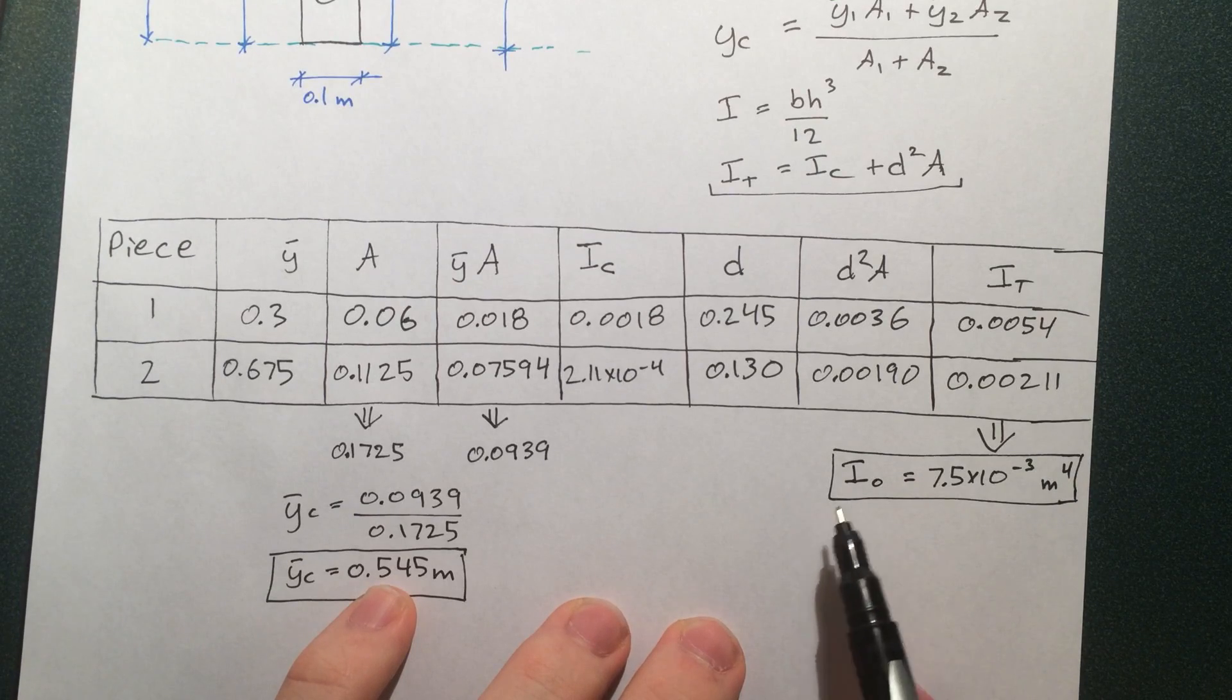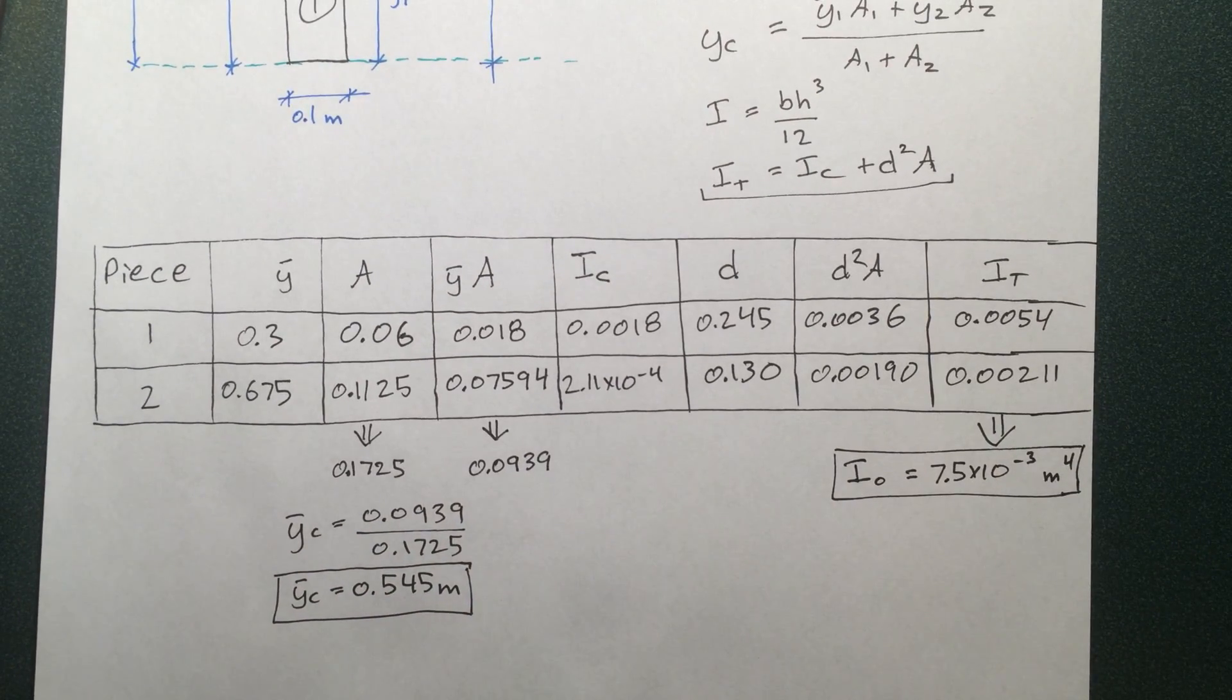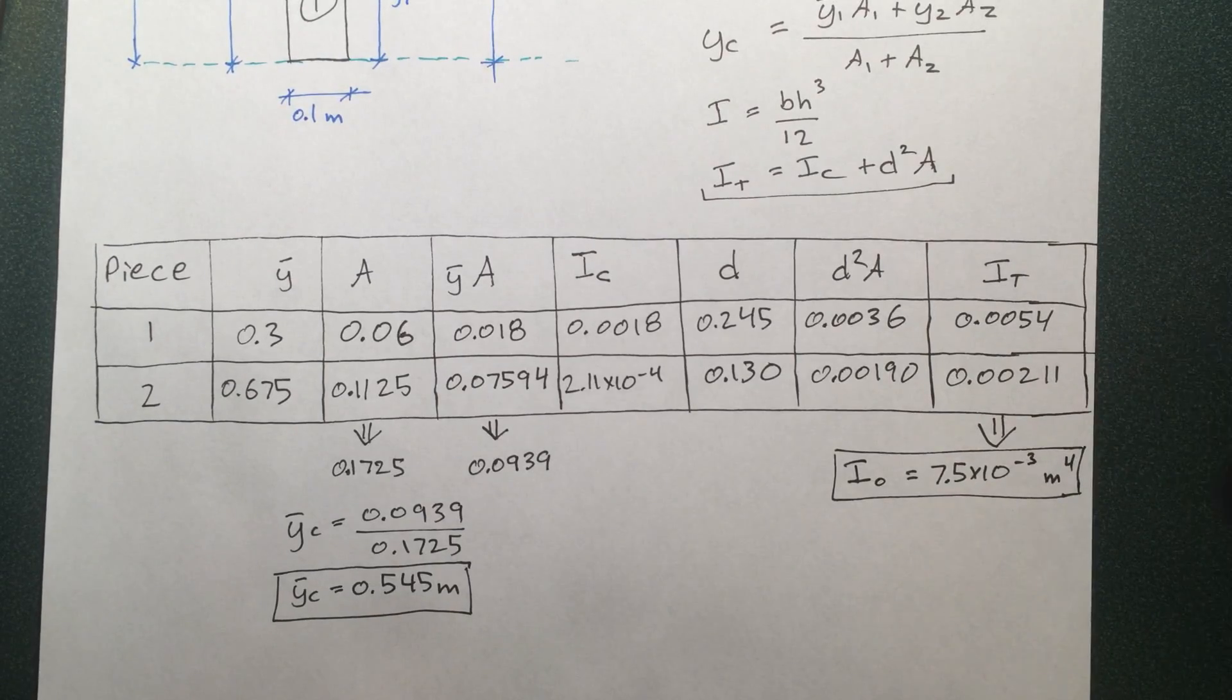The overall moment of inertia is the sum of those two individual moments of inertia. So there's the technique I like to use to find the centroid and the moment of inertia. Let's quickly recap.